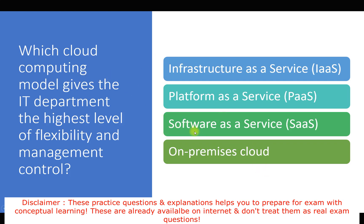In SaaS we have less responsibility and less control. In PaaS we only get access from the runtime, not the OS level — less control again. In IaaS, after the hardware, we choose our OS and control everything from OS to application — what resources, what configuration. We have maximum flexibility and control. So the answer is Infrastructure as a Service (IaaS).